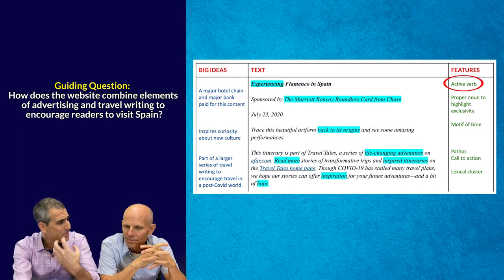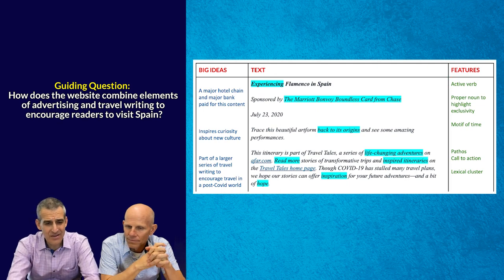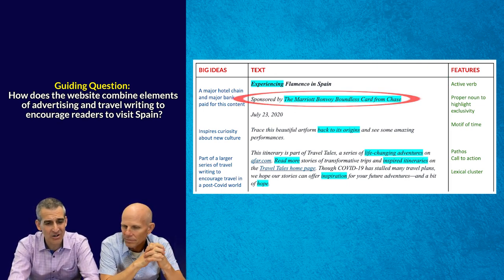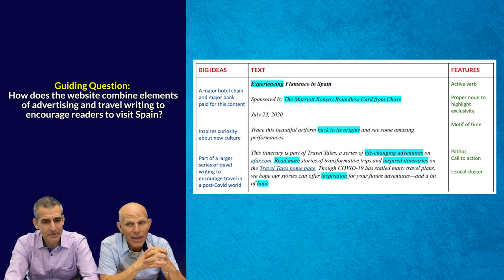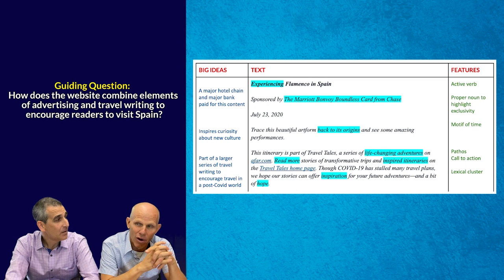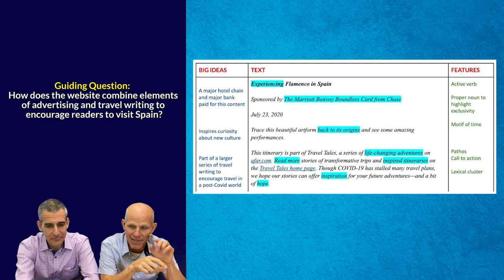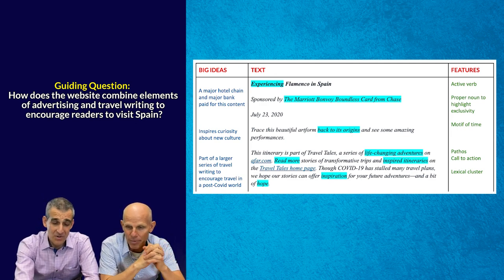I like the active verb 'experiencing' — it makes me want to do it now. I also noticed that this is sponsored by the Marriott Bonvoy Boundless card from Chase. That's super interesting. If they've sponsored this article, then obviously they paid for it — that's what that means. So there's going to be some embedded advertising in the text itself, not only for Chase but also for the Marriott. If you miss that detail, you're missing some key aspects. It says that this particular piece is part of Travel Tales, a series of life-changing adventures on afar.com.